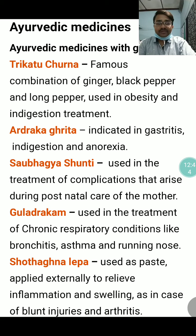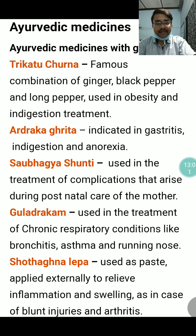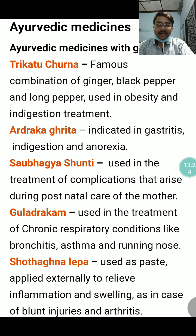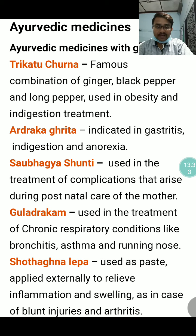Let us see some Ayurvedic preparations with ginger. Trikatu Churna is the famous combination of ginger, black pepper, and long pepper (Sunthi, Maricha, and Pippali), used in obesity and indigestion treatment — and one of the most popular drugs in the days of COVID-19. Ardraka Krita is indicated in gastritis, indigestion, and anorexia. Subhagya Sunthi is used in treating complications arising during postnatal care of the mother. Goulard Dracum is used in chronic respiratory conditions like bronchitis, asthma, and running nose. Shothaghna Lepa is used as a paste applied externally to relieve inflammation and swelling in cases of blunt injuries and arthritis.